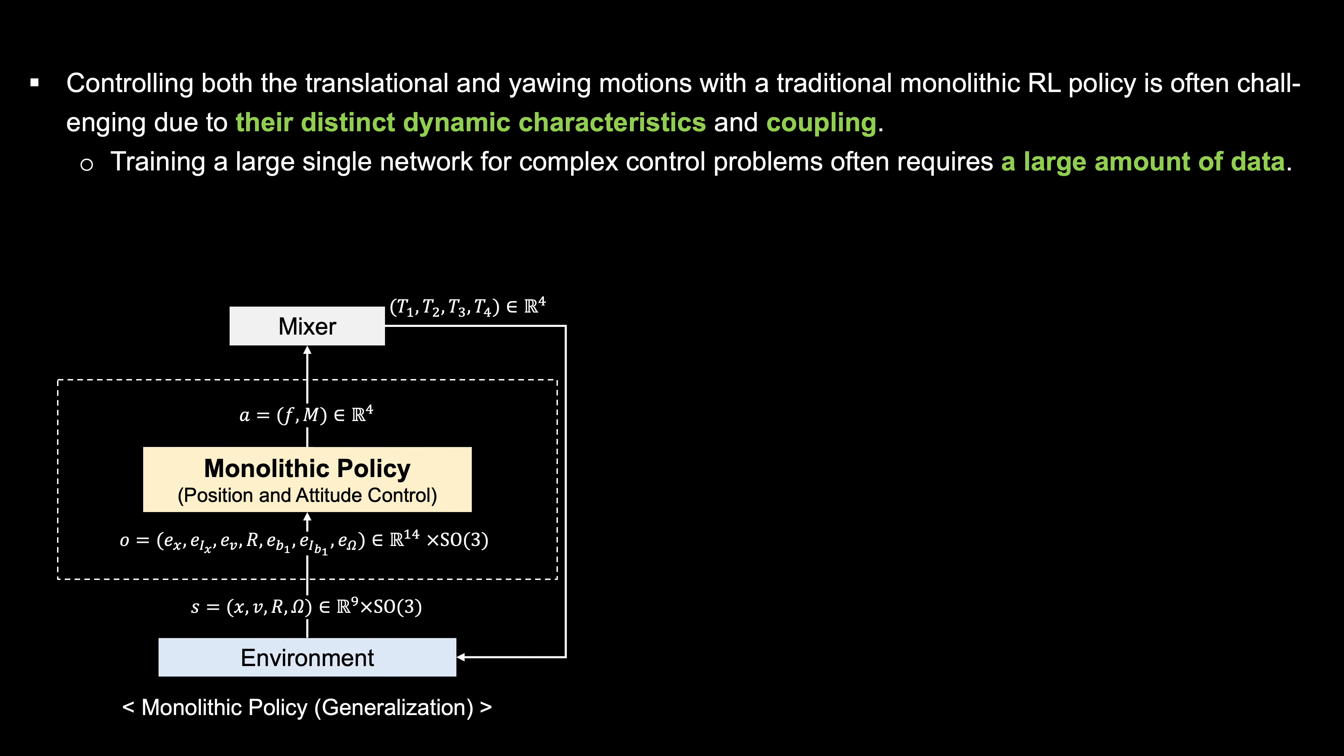Controlling both translational and yawing motions using a traditional monolithic policy presents significant challenges, because these motions have distinct dynamic characteristics and are strongly coupled. Also, training a large single network often requires a large amount of training data, which can be inefficient and difficult to achieve.